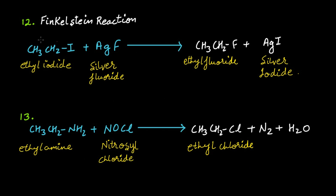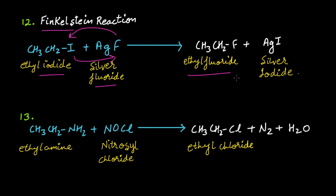The twelfth method is the Finkelstein reaction, where halogen exchange takes place. When silver fluoride is treated with ethyl iodide, fluorine takes the place of iodine — ethyl fluoride is formed and silver iodide is formed. This is a named reaction, so you should remember it.